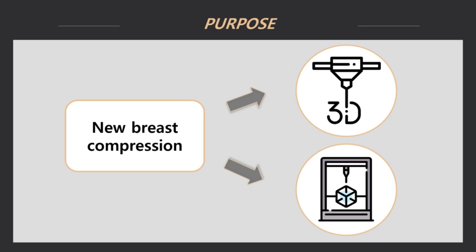In addition, if a support is formed on the surface of the compression pedal that touches the breast during printing, it becomes rough during the refining process and does not maintain even density. To compensate for this, the pressure band was rotated to produce rough surfaces on the side, not on the top.